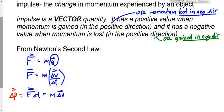Notice that impulse isn't just equal to M times ΔV — it's also equal to F times T. What do you need to do to change the momentum of something? You need to apply a force. But it's not good enough just to apply an instantaneous force; you need to apply that force for a period of time. The longer the period of time, the more you're going to change the momentum. So the change in momentum equals M times ΔV, and also equals F times the time you apply it for.